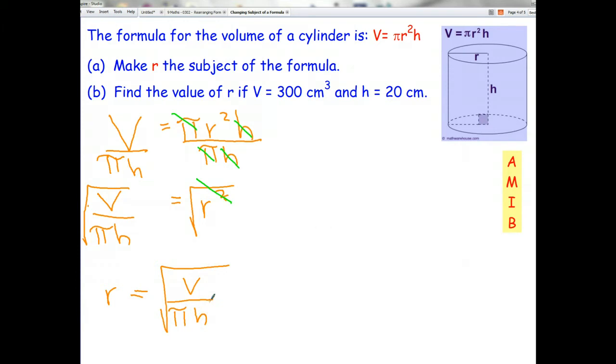Let me quickly go ahead and work that out. I forgot to get it on my calculator earlier, so it's going to take me a little bit of time. In place of V, I write 300. In my denominator, I write pi times 20. Just give me a sec to punch this into my calculator.